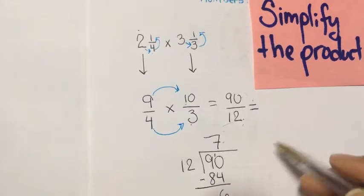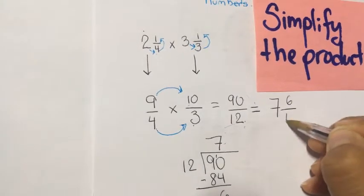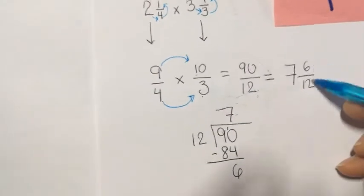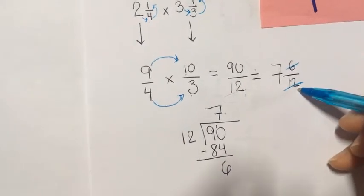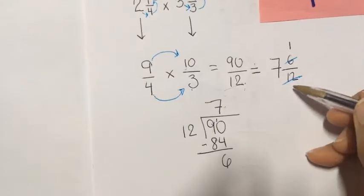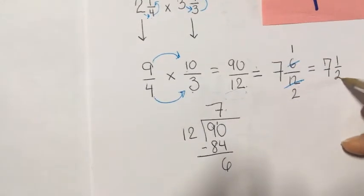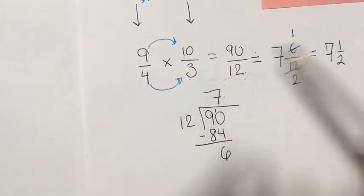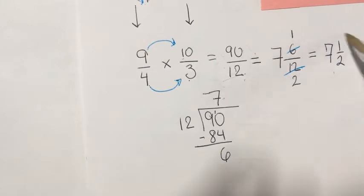The next step is to simplify the product. We simplify the fraction part carefully — 6 and 12 are in the same table of 6, so let's simplify by 6. 6 divided by 6 is 1, and 12 divided by 6 is 2. The real answer is 7 and 1/2. You can simplify at the beginning or at the end — it doesn't matter, you will get the same answer.